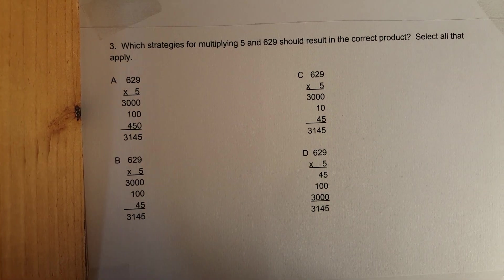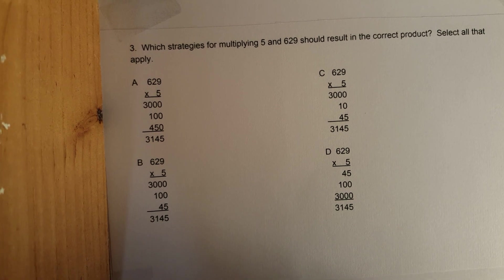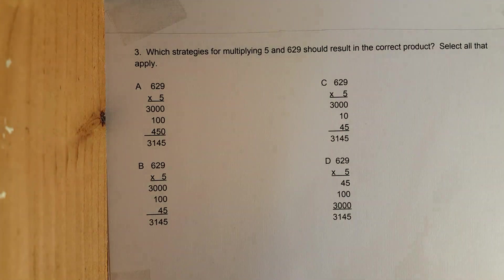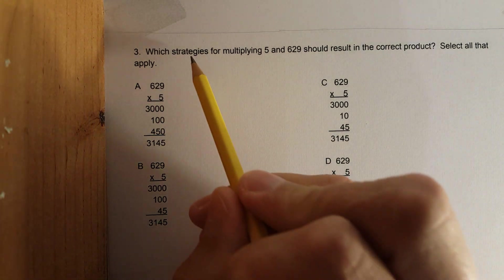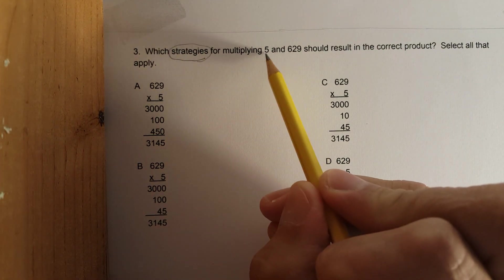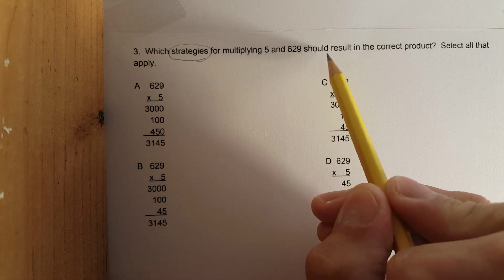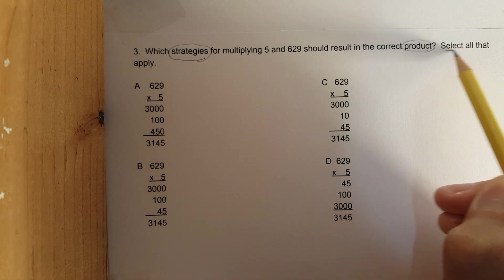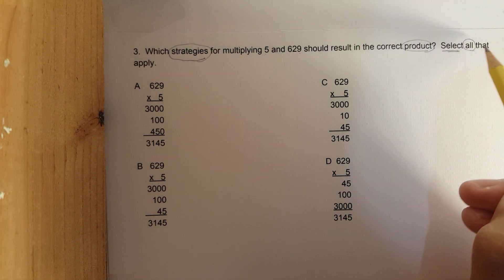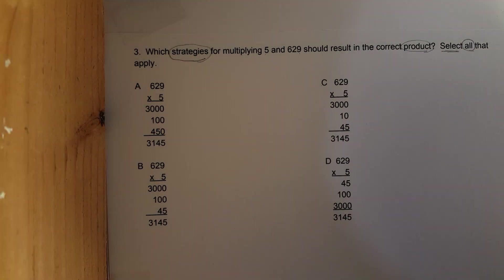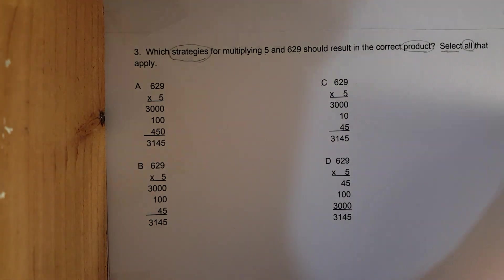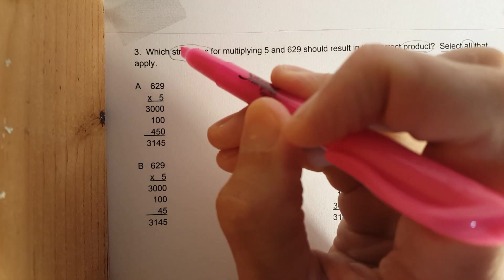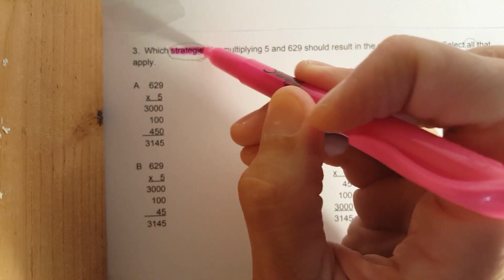You can watch as many times as you want and feel free to give feedback or comments. Here we go. Number three: which strategies for multiplying 5 and 629 should result in the correct product? Select all that apply. Let me reread that.